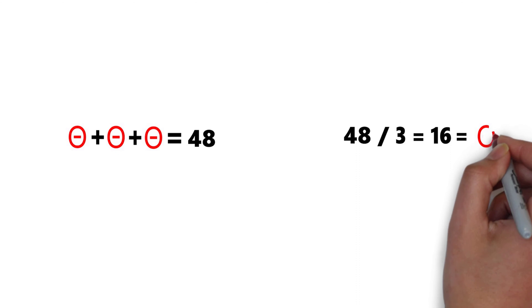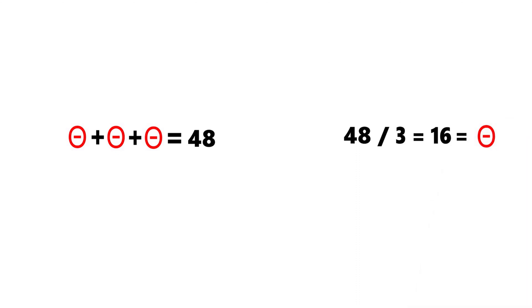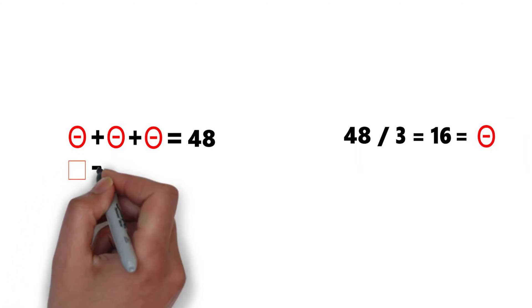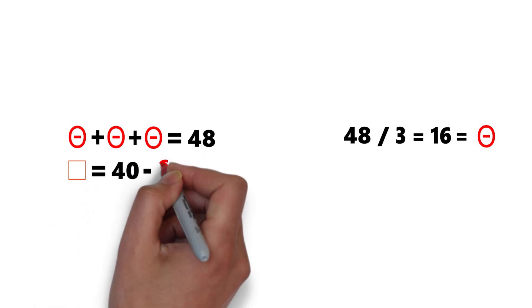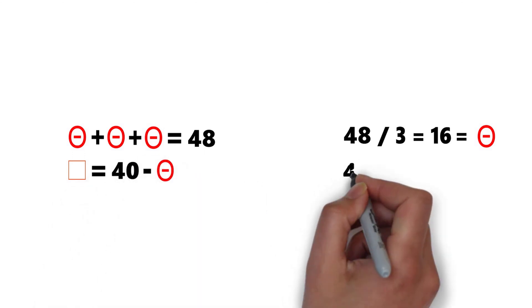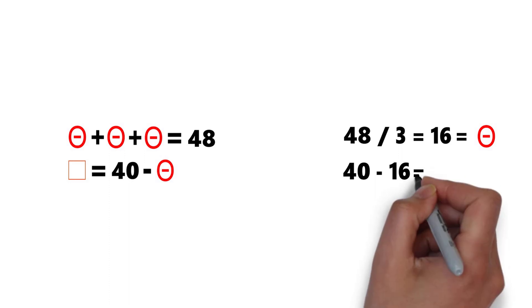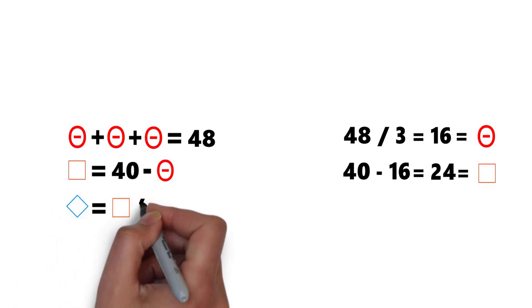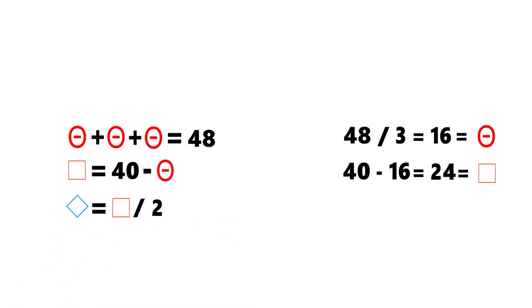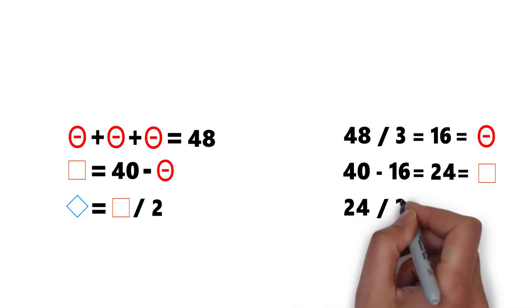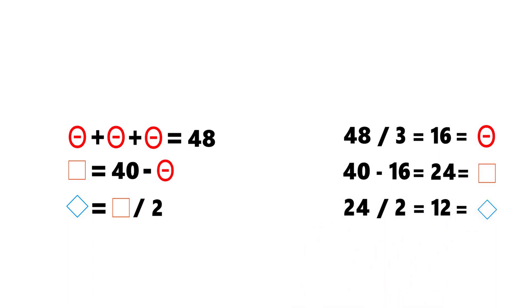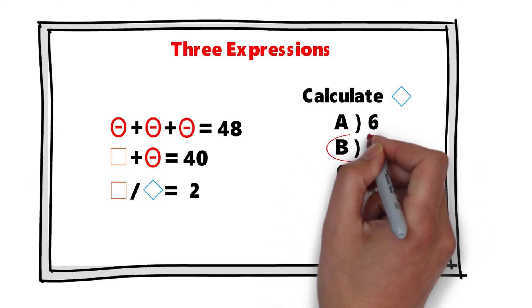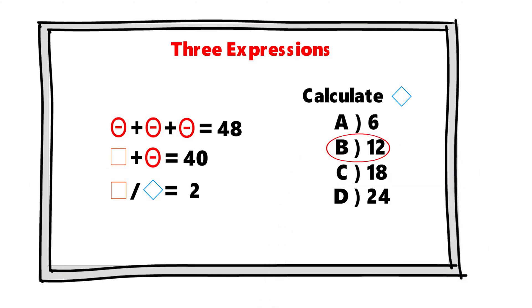In the next step, square equals 40 minus the circle, which equals 40 minus 16, and the result is 24. In the last step, diamond equals square divided by 2, which equals 24 divided by 2, and the result equals 12. So the correct answer is choice B: 12.